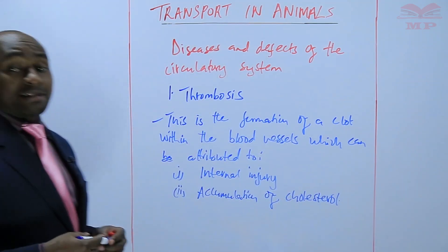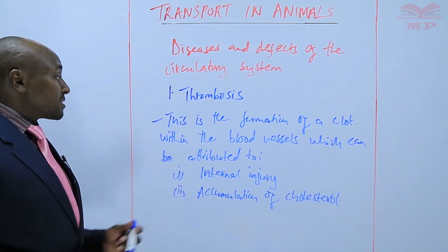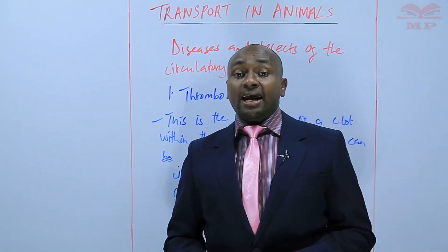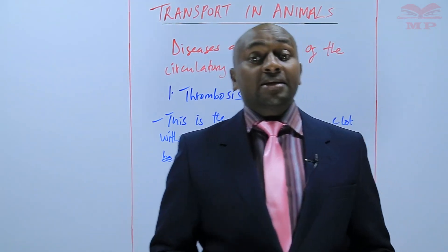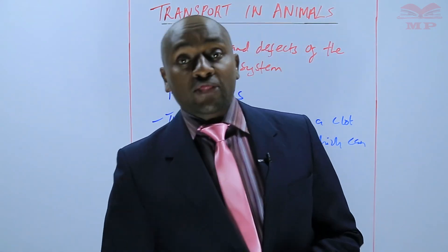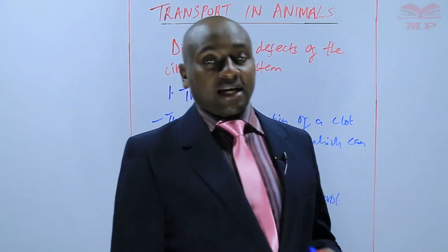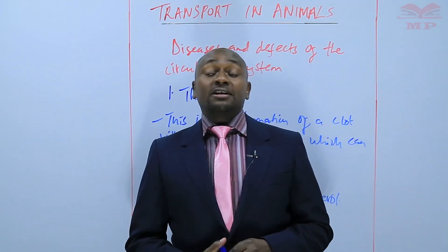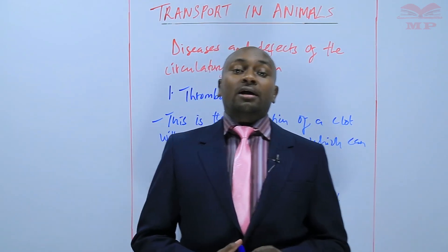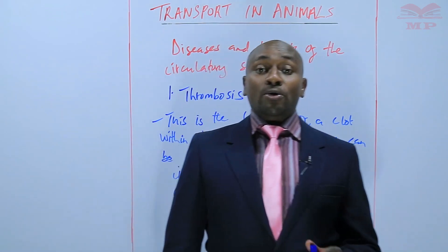Cholesterol accumulation is due to large intake of fats or fatty foods. Now, this thrombosis sometimes can affect the coronary artery that supplies blood to the heart muscles — we refer to that as coronary thrombosis. We also have another thrombosis that may occur on the artery that takes blood to the brain, and we refer to that as cerebral thrombosis.